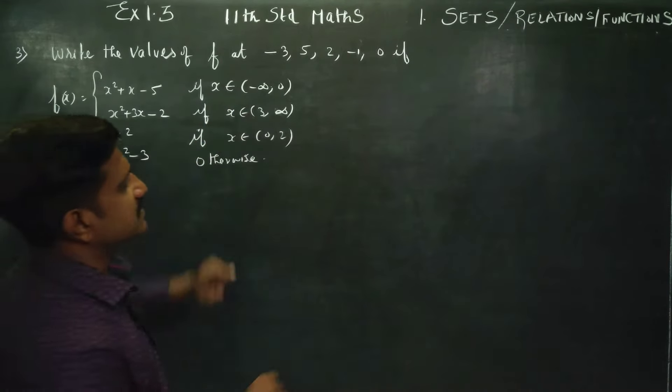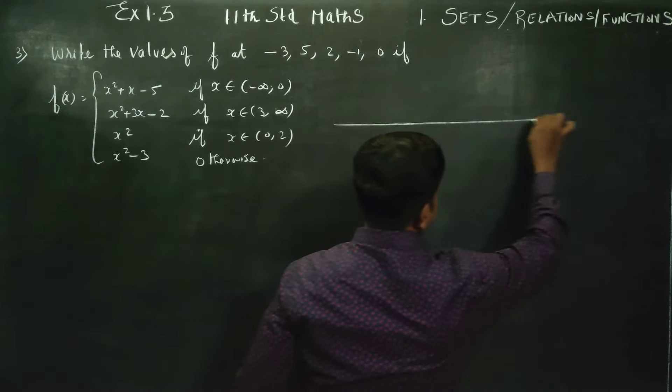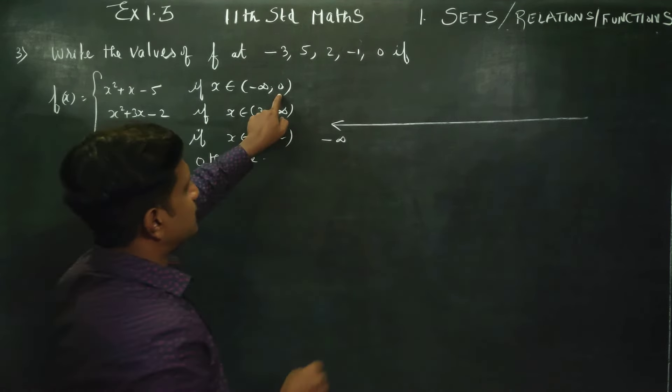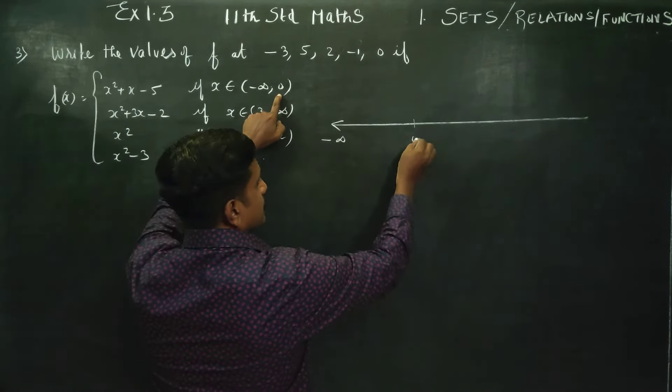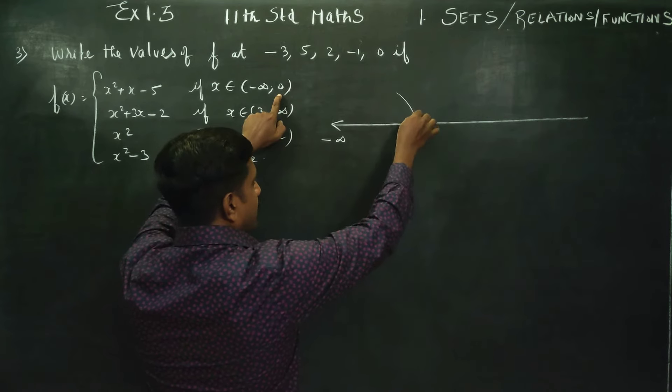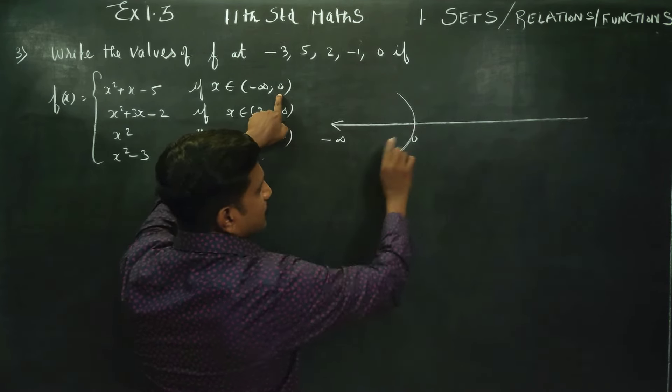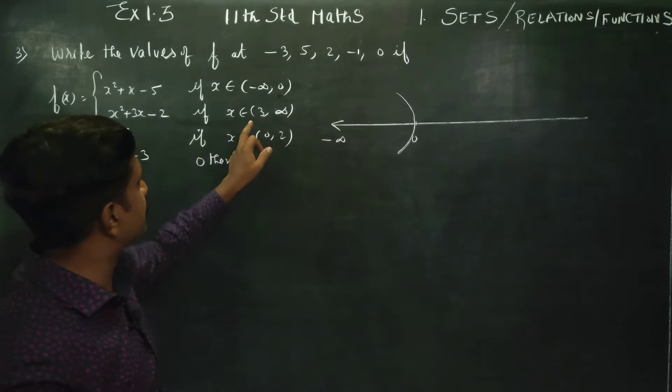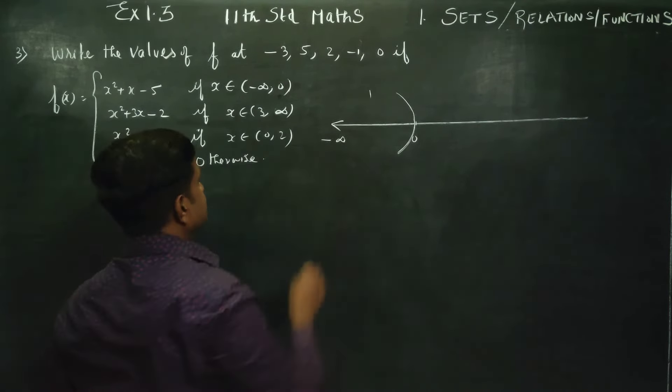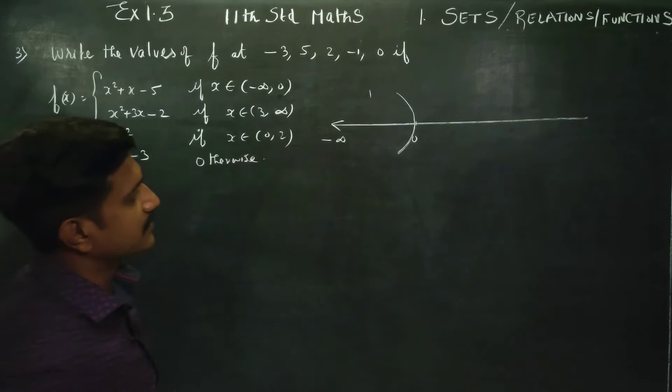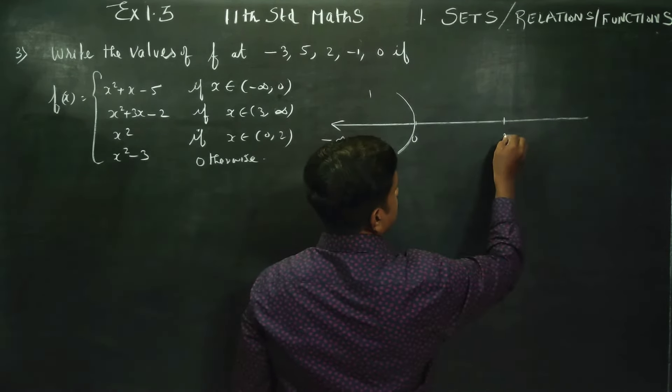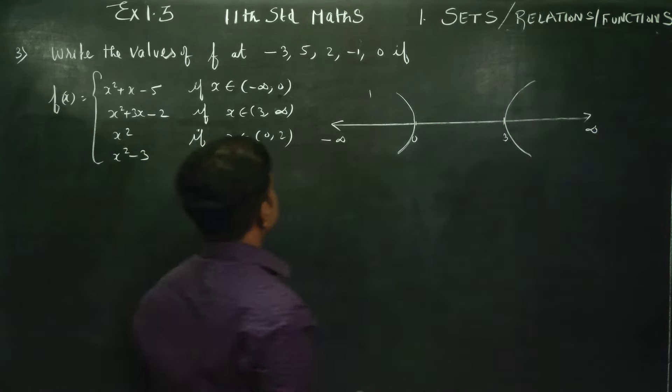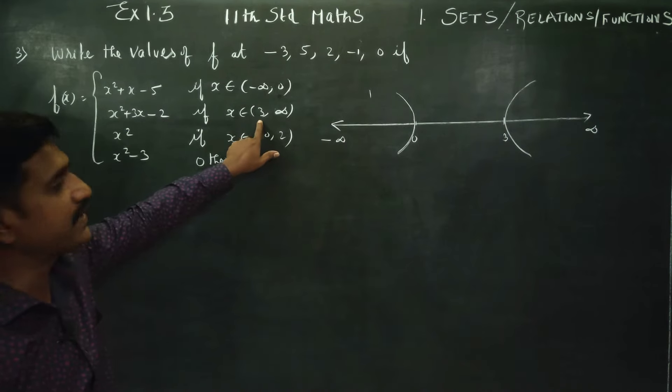x belongs to minus infinity to 0. Just to draw a number line, this is my minus infinity up to 0. It is an open interval therefore 0 is excluded. You are not including 0. 3 to infinity, this is for first function. Second function is 3 to infinity.